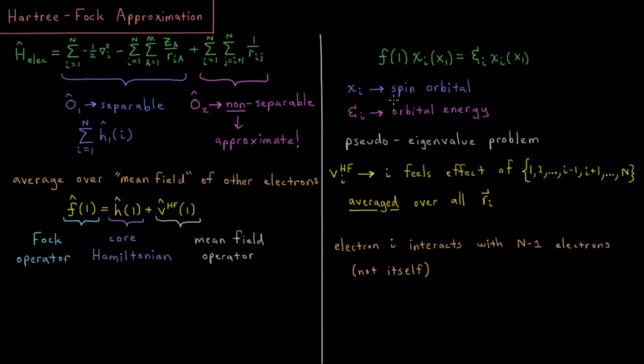So in this case, what we'll get is the Fock operator acting on a particular spin orbital in our system is going to give an orbital energy times the same spin orbital. And those of you who are paying attention here would note that this is an eigenvalue problem, where we have an eigenvalue of the orbital energy, and an eigenfunction of our spin orbital, being the eigenfunction of the Fock operator.